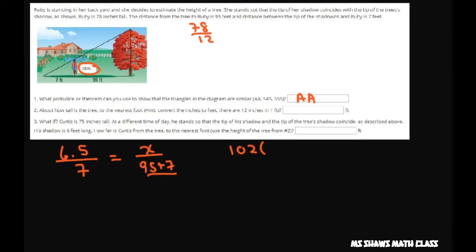So we're going to do it again. Let's convert 78 divided by 12, and we get 6.5. So we're going to have 6.5 divided by 7 equals x divided by 95 plus 7. The only thing that changed was the height here, so this is 102. It's still by angle-angle again. 102 times 6.5 divided by 7 equals your x.